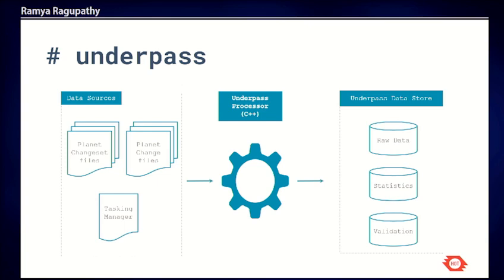Underpass is one of the data sources we maintain, focused on the current snapshot of data available on the OpenStreetMap database. Underpass has a C++ processing script that ingests minutely files from planet OSM sources. These minutely planet files capture what goes into the OSM database every minute — what features were added, modified, or deleted. The script updates three different tables: raw data, statistics derived from that raw data, and data quality issues.